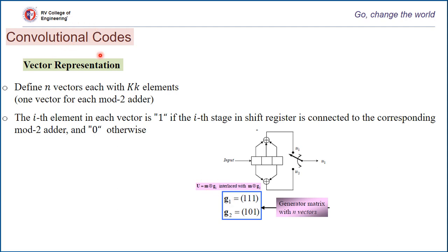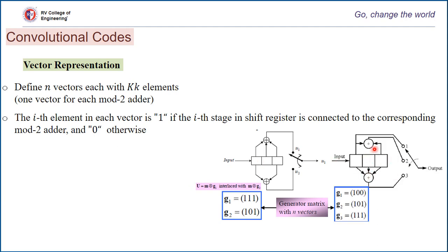Here is another structure of a convolution code. The first output bit comes only from the first memory element, so the generator vector is 1, 0, 0. The second encoded bit has inputs from the first and last elements, giving generator 1, 0, 1. The third encoded output is produced using all three memory elements, so G3 is 1, 1, 1. This is how the structure of a convolution code is represented vectorially.